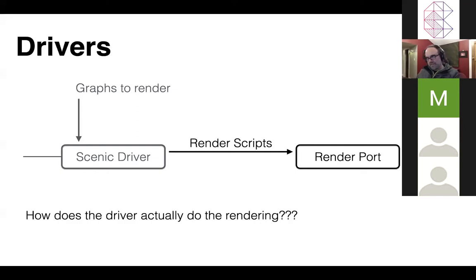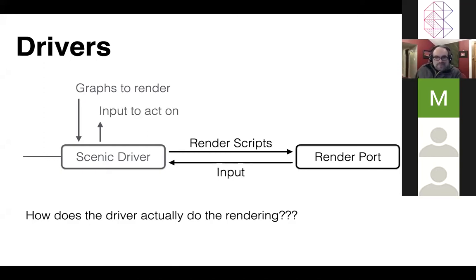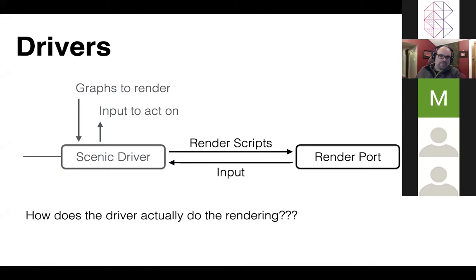That flat list gets rendered into a binary script, which gets handed over standard IO to the render port. That port executes the script in a very efficient manner to do the actual drawing to the screen. Each of the scenes ends up rendering a different script, so if you only change one little component of your drawing, you don't have to re-render the whole thing — you just re-render the piece that changed.